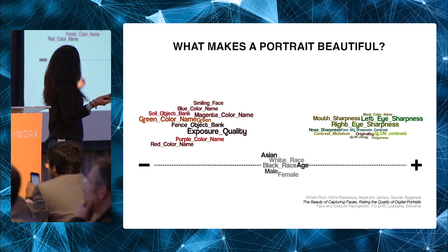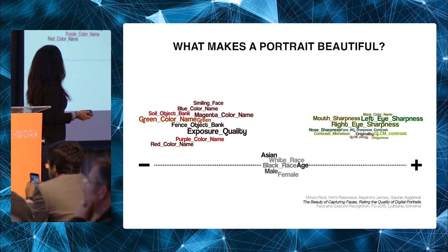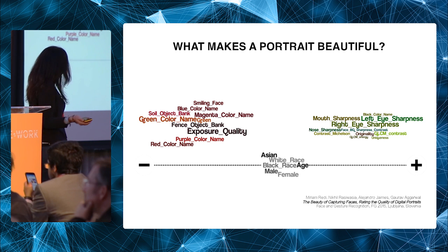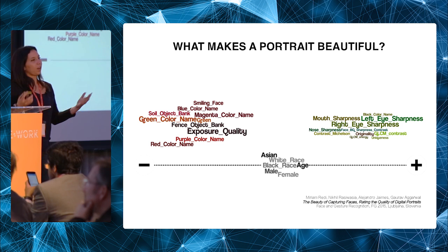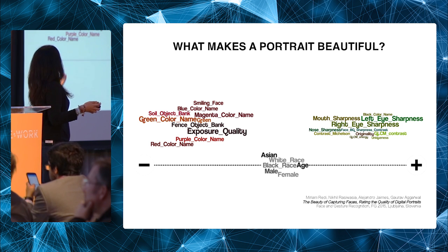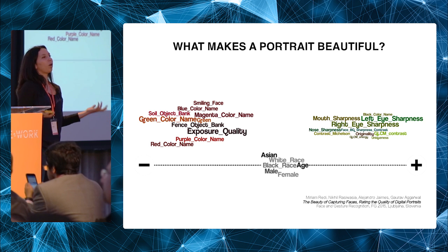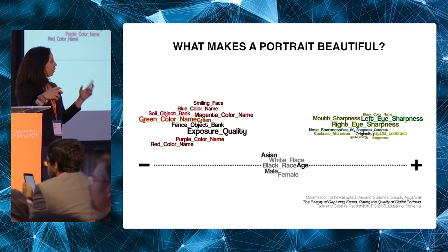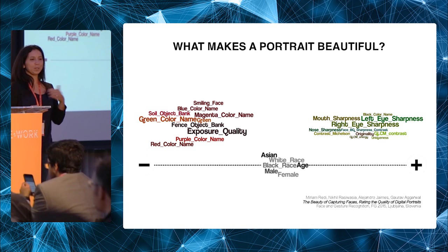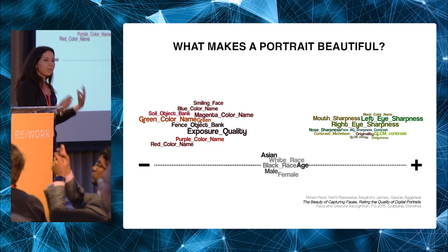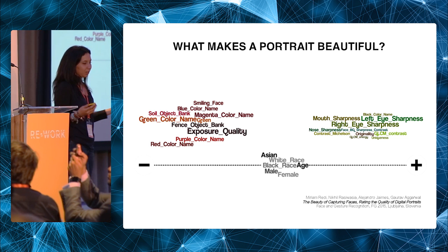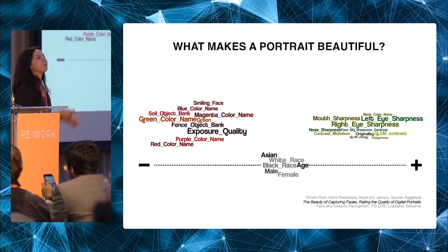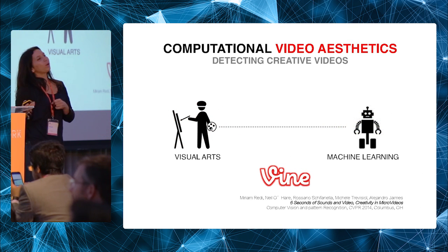Some features, like sharpness of face landmarks, are positively related to portrait beauty. Features like exposure balance are negatively related. And there's a third group we can discard as useless: age, race, and gender of the person depicted. This tells us that no matter the demographic of the subject, if the photographer does a good job, the resulting portrait will be beautiful. This kind of study helps us avoid racist behaviors in machine aesthetics systems.